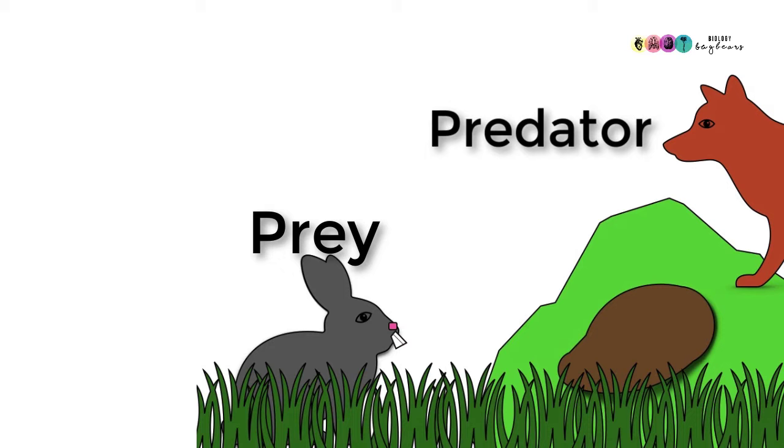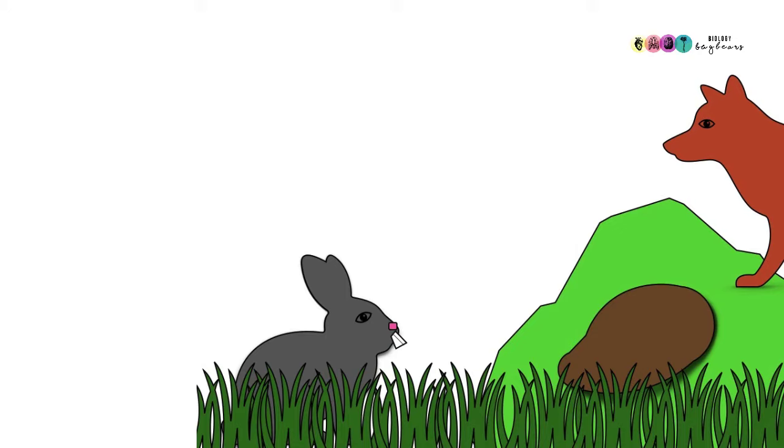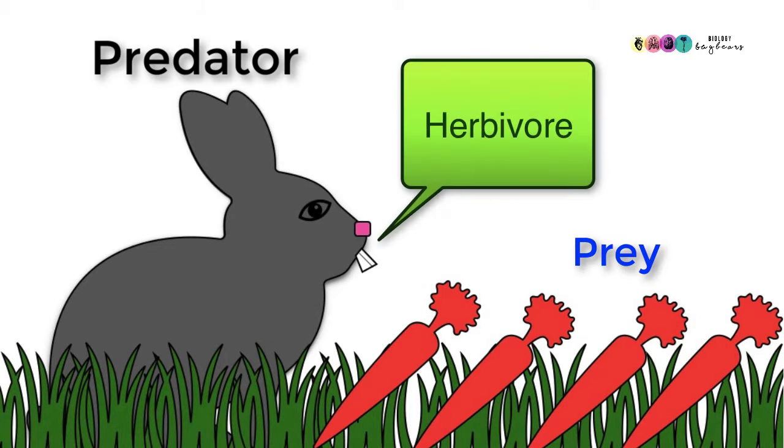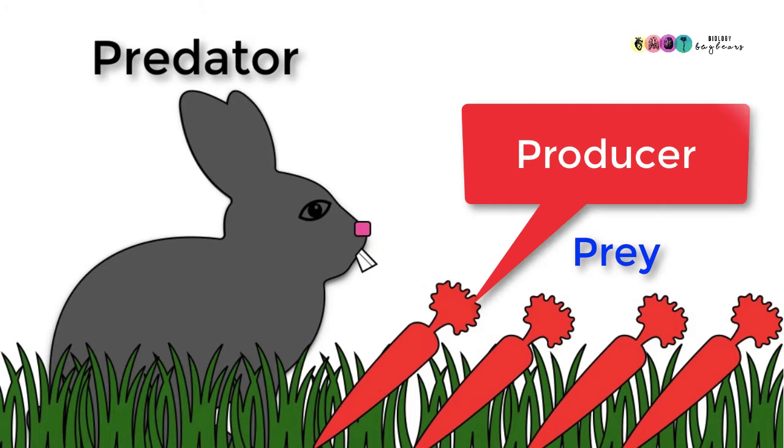When we consider predator and prey relationships we're usually thinking of organisms such as a fox eating a rabbit or a lion eating another animal, but what we forget sometimes is that herbivores, those animals that eat only plant material, they are actually predators and the plant material, the producers, are the prey.